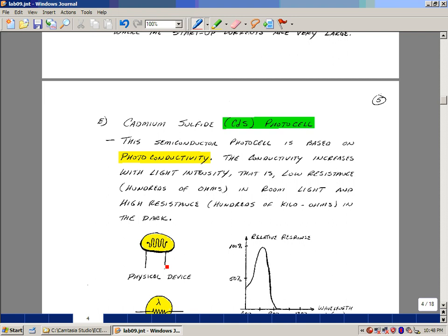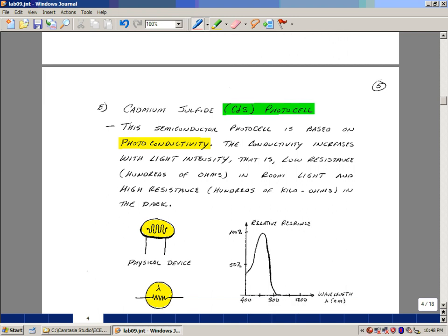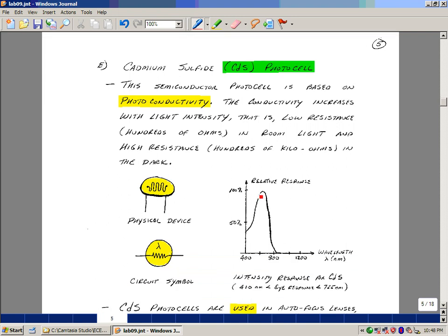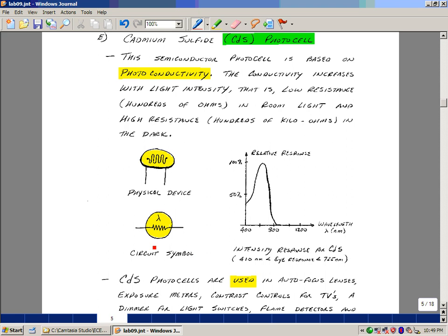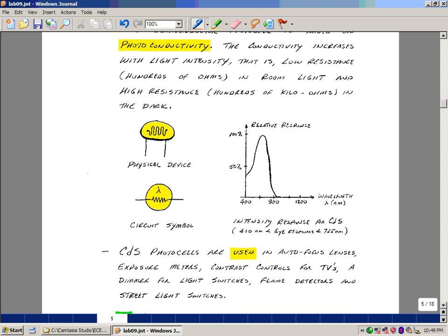What's interesting about these particular photocells is that they have a response with the wavelengths of light that are very similar to the human eye, about the same response. So what we see is really what this sensor also sees. This is the electrical symbol for this photocell. It's a resistor dependent on a wavelength of light. These photocells are used in all kinds of things that need to respond like a human eye.